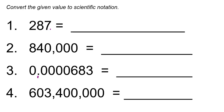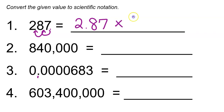So with 287, we need to move the decimal point until we have a number between 1 and 10. Moving it once to the left gives us 28.7, which is still larger than 10. Moving it again gives us 2.87. That is between 1 and 10, so that's our value — 2.87. We of course need to multiply this by 10 raised to some power in order to get it back to its original value of 287.